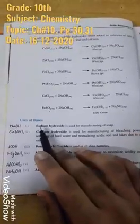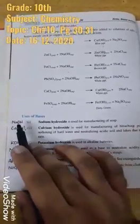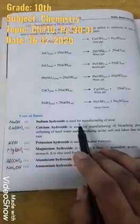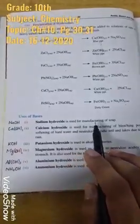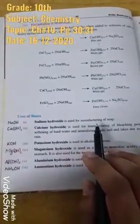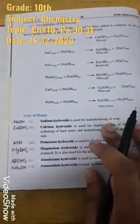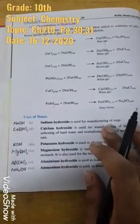First of all, our base is sodium hydroxide. Sodium hydroxide is used for manufacturing of soap. We have studied the characteristics and practically we have done this.